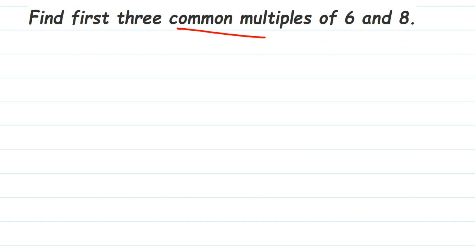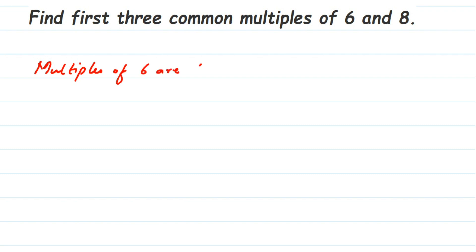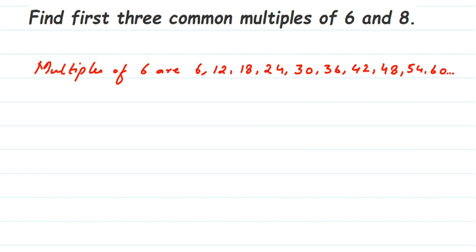First, let's look at the multiples of six — we just write down the six times table. Six ones are six, six twos are twelve, six threes are eighteen, six fours are twenty-four, six fives are thirty, six sixes are thirty-six, six sevens are forty-two, six eights are forty-eight, six nines are fifty-four, then sixty, and so on. I'll stop at sixty for now since we only need three common multiples.